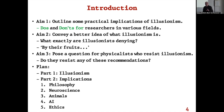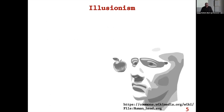The plan: I'll begin with a brief, rather caricatured introduction to illusionism — a reminder for those who know it, a quick introduction for those who don't. I'll try to keep that to about 10 minutes, then trace through implications and do's and don'ts for five areas: philosophy, neuroscience, animal consciousness, AI, and ethics. This will be a starting point for discussion over the next two days.